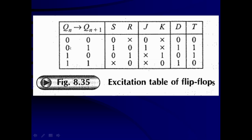For the SR flip-flop excitation table: 0→0 requires S=0, R=don't care (0x); 0→1 requires S=1, R=0 (10); 1→0 requires reset condition S=0, R=1 (01); 1→1 requires S=don't care, R=0 (x0). Presence state 1 is maintained if SR=x0: either SR=00 or SR=10. This is shown in figure 8.35. Excitation tables for other flip-flops are obtained similarly.